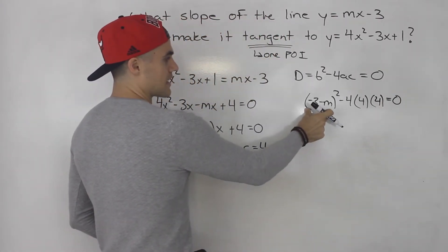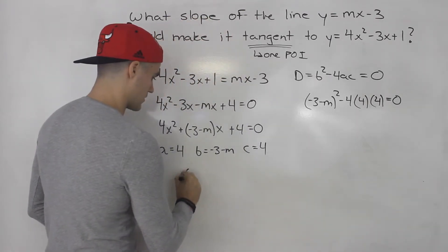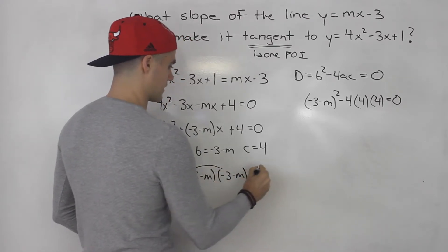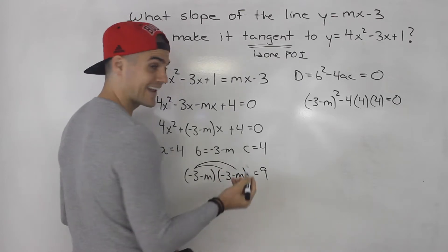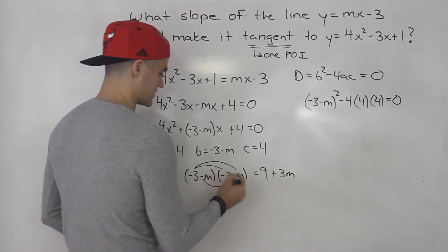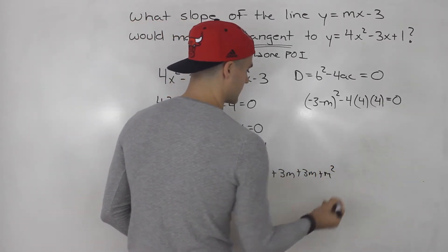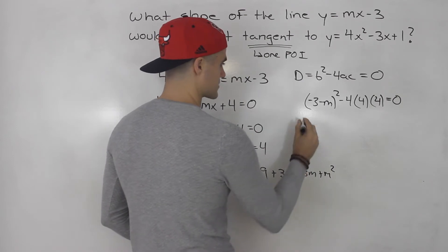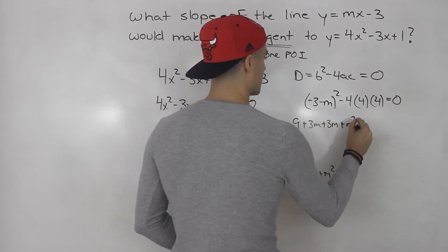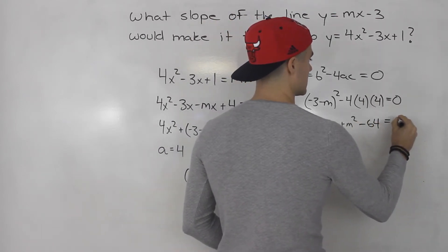From here, we could foil this out: negative 3 minus m times negative 3 minus m. Negative 3 times negative 3 gives us positive 9. Negative 3 times negative m gives us positive 3m. Negative m times negative 3 gives us positive 3m as well. Then negative m times negative m gives us positive m squared. So this expression becomes 9 plus 3m plus 3m plus m squared. And then negative 4 times 4 times 4 gives us negative 64. That's going to equal 0.